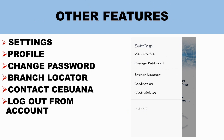Next are the other features found in the three horizontal lines in the upper left corner. You'll find Settings, Profile, Change Password, Branch Locator, Contact Cibuana, and the Log Out button. I'll discuss each of these one by one.